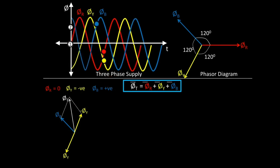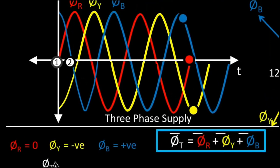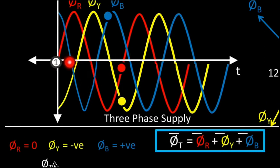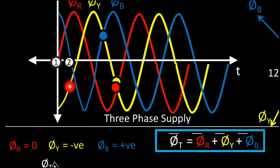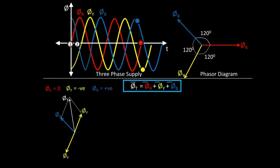Similarly, concentrating on instant 2, we find the values for each flux. At instant 2, we can see that φB is 0 because it intersects with the x-axis. So φB = 0 for instant 2. φY is upward, so it is positive. And φR is downward, so it is negative. So at instant 2: φR is positive, φY is negative, and φB is 0.